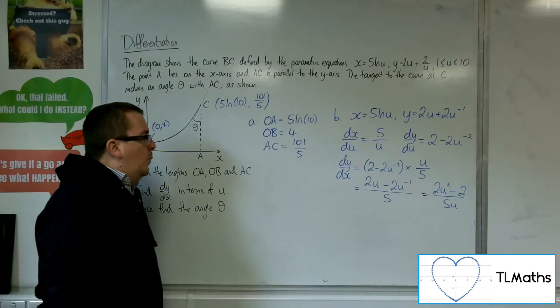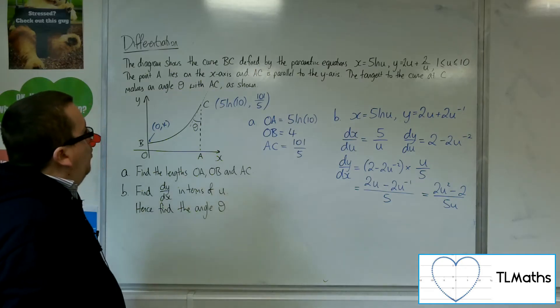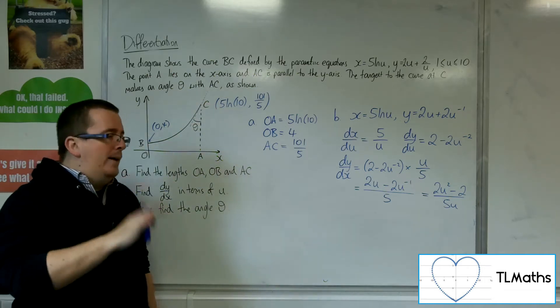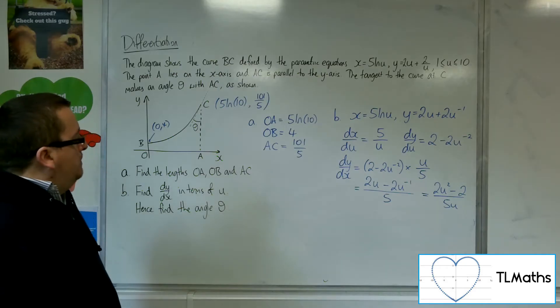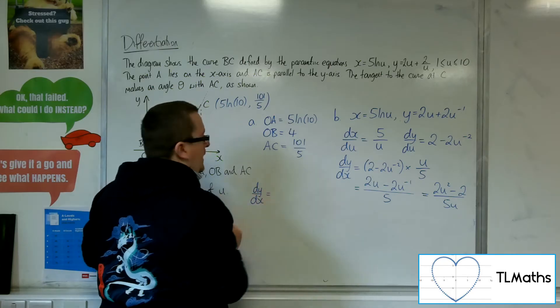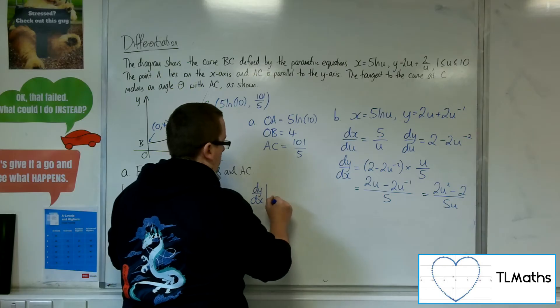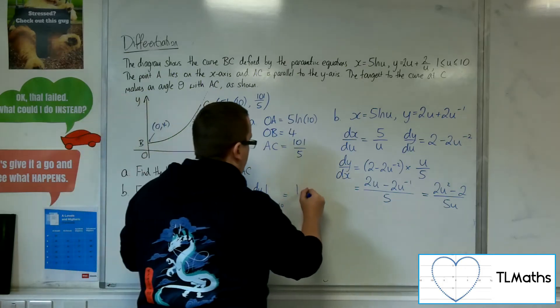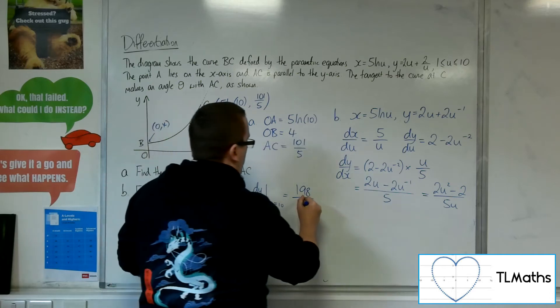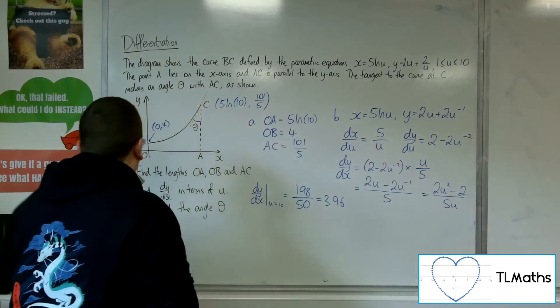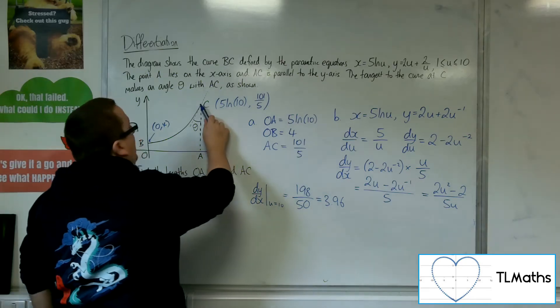So with that in mind, I can now work out what the gradient of the tangent to that curve at point C is. I can work out that gradient. And that would be by substituting u equals 10 into this. So dy by dx at u equals 10 is equal to, where we're going to have 2 lots of 10 squared, take away 2. So 198 in the numerator over 50. So that's 3.96. That is the gradient at that point of the curve.